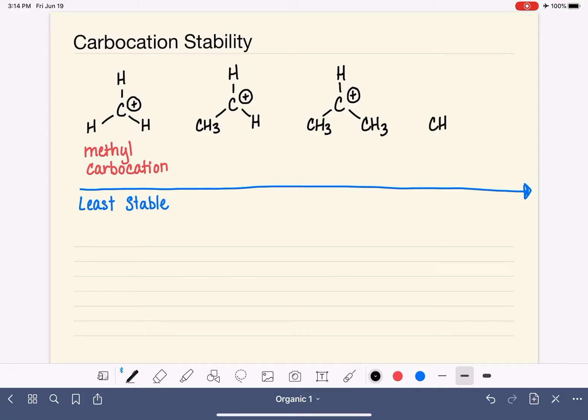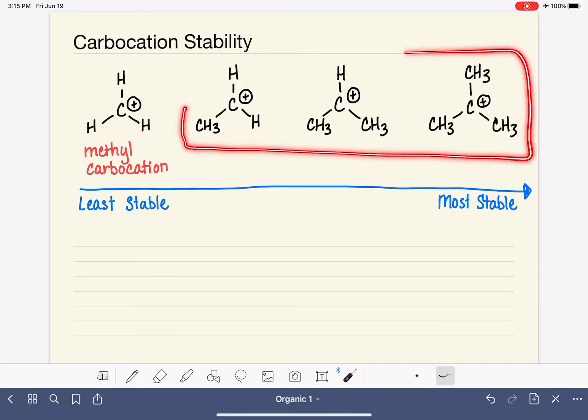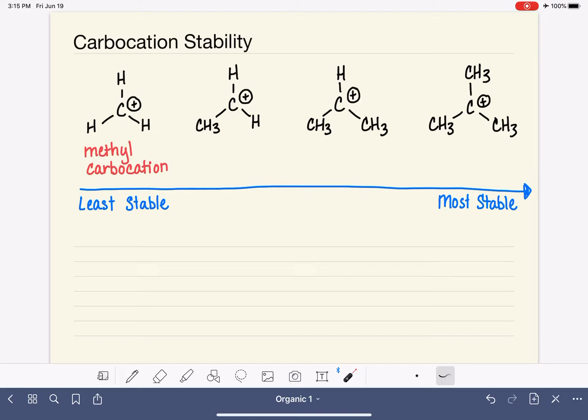The most stable type of carbocation is one that has three alkyl groups attached to the central carbon, so three alkyl groups, and no hydrogens at all attached to this central carbon. So this is the most stable type of carbocation. For these three different types of carbocations that I drew, I drew very specific carbocations. What we want to be able to do is generalize this comparison to all different types of molecules.